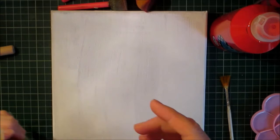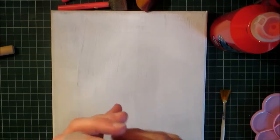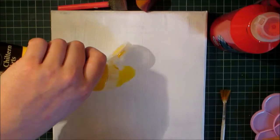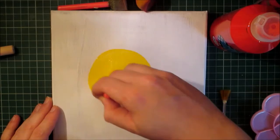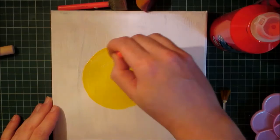You will also need sponge dabbers and a fan brush if you have one. Using this yellow paint, I am going to put some yellow paint in the center and that is going to be the basis of the sunset or sunrise depending on what you prefer.